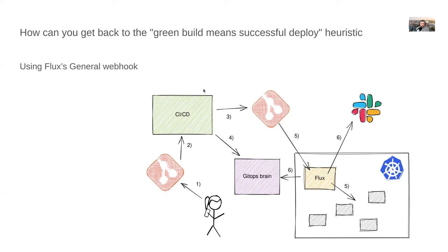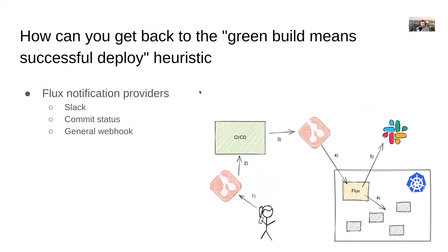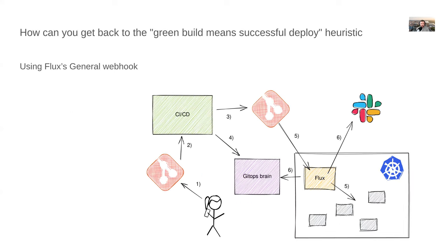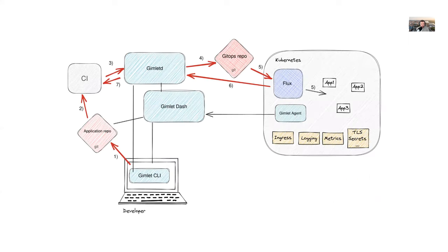At some point the GitOps brain says it's deployed and CI/CD can finally say green build, or something went wrong — red build. There are other possibilities too, like the commit status hook on the GitHub API. I favor the GitOps brain approach — not surprisingly, because we already have this: it's our Gimlet D component, our GitOps release manager.